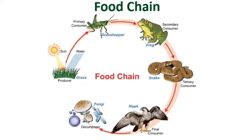When this carnivore dies, it is decomposed by organisms called decomposers, which release the minerals back into the soil, thus completing the food chain. In this food chain, the grass is the producer, the grasshopper is the primary consumer, frog the secondary consumer, snake the tertiary consumer, and hawk the final consumer, which when it dies is decomposed by decomposers.